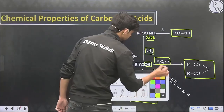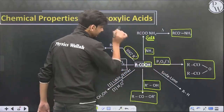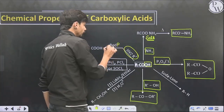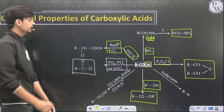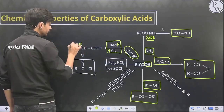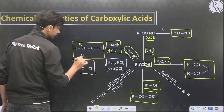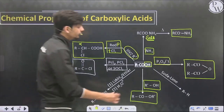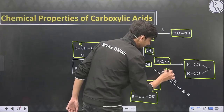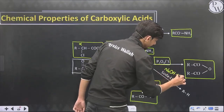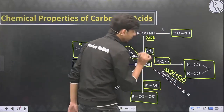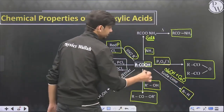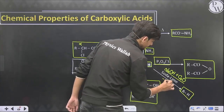Using PCl5, PCl3, or SOCl2, the –OH is again replaced by –Cl and we get an acid chloride. A very special reaction is the Hell–Volhard–Zelinsky (HVZ) reaction: in the presence of red phosphorus and chlorine (or bromine), we get an alpha-halogenated carboxylic acid. Soda lime, which is a mixture of NaOH and CaO (caustic soda and lime), gives decarboxylation and an alkane is formed — the carboxyl group is removed as CO2.